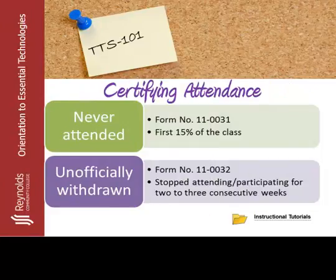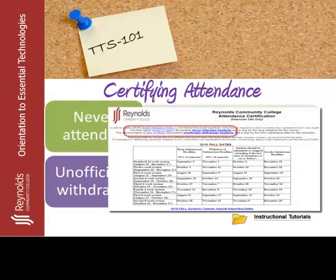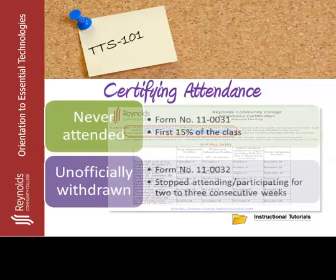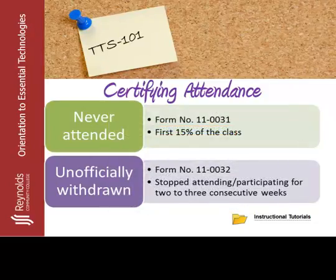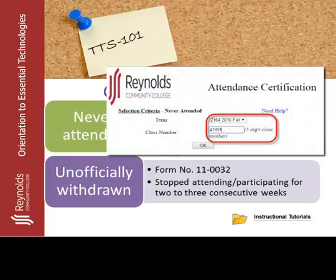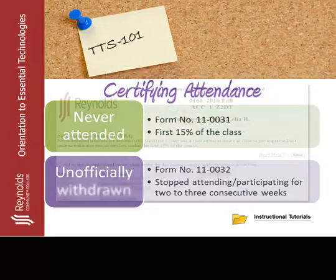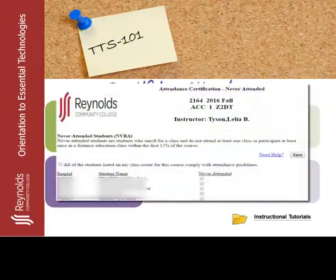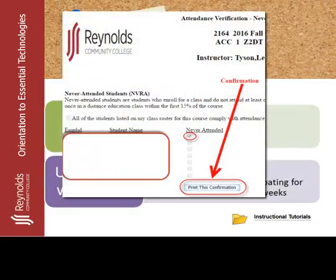When you are prepared with your documentation and course identifiers, click on the appropriate form link, whether it is Never Attendant Students at the start of the semester or the Unofficial Withdrawn Students after mid-semester. In order to complete your certification, you will need your five-digit course ID number. Select Never Attendant Students by clicking the radio button aligned with the student name. When confirmation appears, be sure to print out the form so that you maintain documentation of your submission.